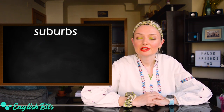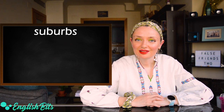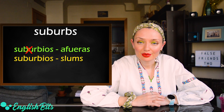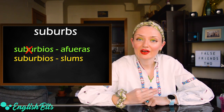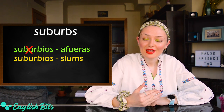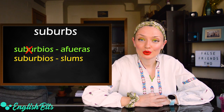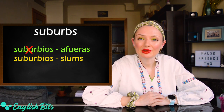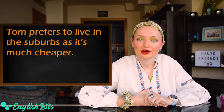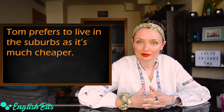Number five: 'suburbs'. In English, it doesn't mean 'suburbios' but 'outskirts' — an area near a big city but away from its center. If you want to say 'suburbios', it would be 'slums'. For example: Tom prefers to live in the suburbs as it's much cheaper.